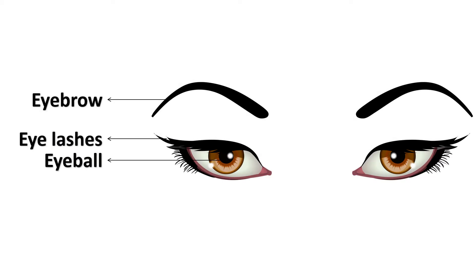We have two eyebrows. We have eyelashes which protect our eyes from dust and dirt. And we have two eyeballs to see.